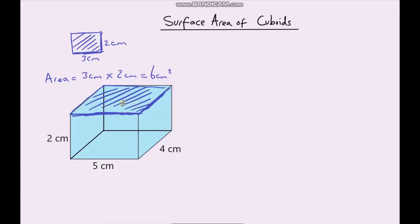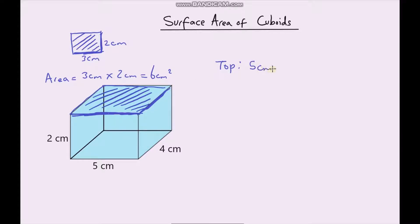So let's calculate the surface area of each of these different faces of our cuboid. Let's start with the top face. Now the top face is going to be 5cm multiplied by 4cm.